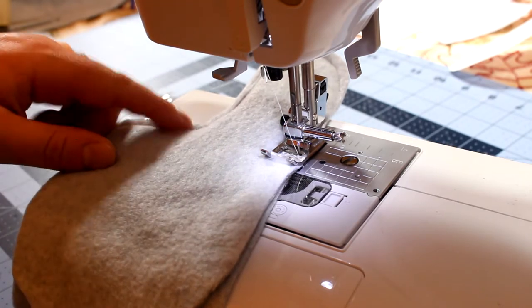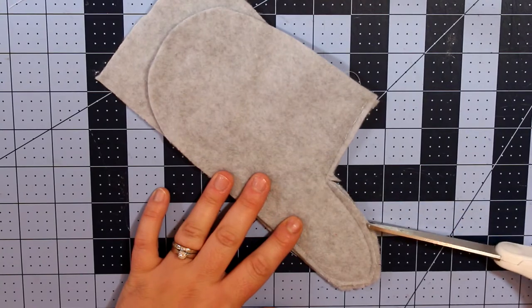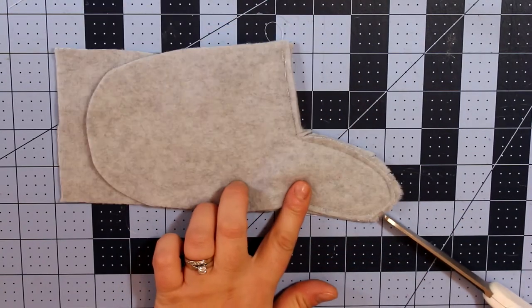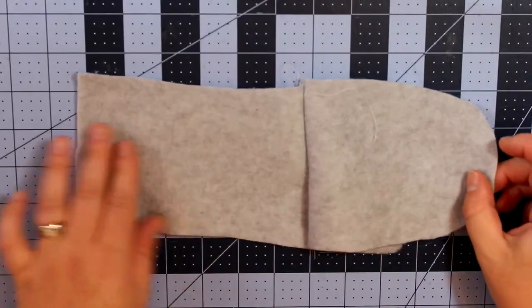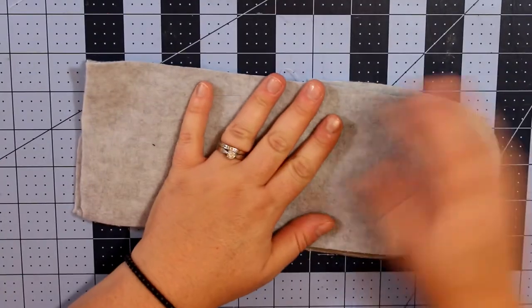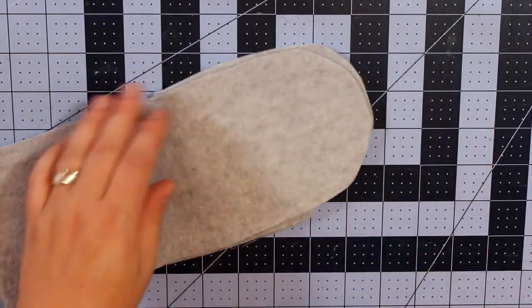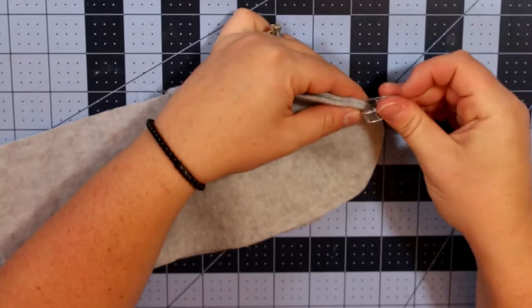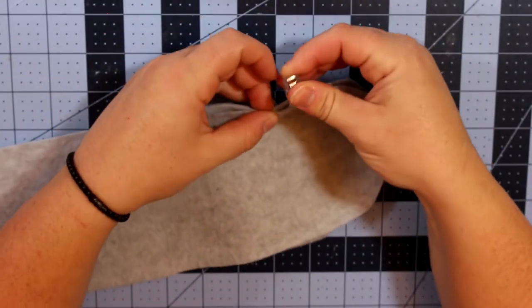And then you're going to stop and just backstitch to lock that in. Now I'm just going to snip the corners and the rounded edges just to make it easier for when I turn it and it lays nice and flat. Make sure you don't snip your thread of course. And then you're going to lay the long piece on top, making sure that thumb piece is on the outside. Just going to put a few clips to make sure it stays all together.